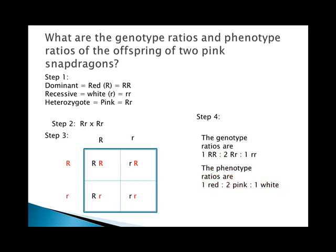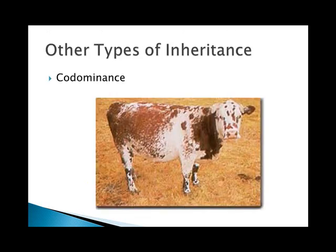With incomplete dominance, the phenotype ratios follow the same numbers as the genotype ratios — unlike usual. The phenotype ratios are one red to two pink to one white, because incomplete dominance shows a blending of traits in the heterozygote. This is different from codominance.